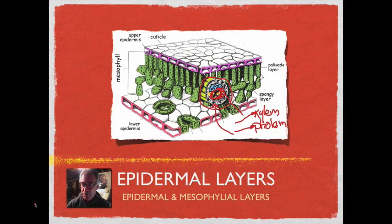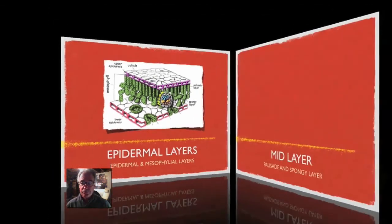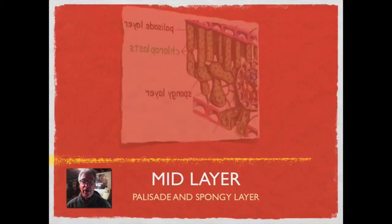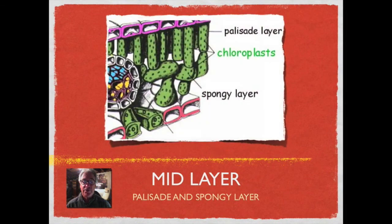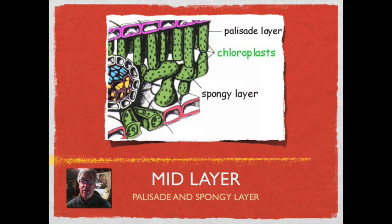Next, let's take a look at these mid layers and their looser arrangement. As mentioned, the palisade layer as well as the spongy layers are undifferentiated in some plants, but they are packed and rich with chloroplasts.